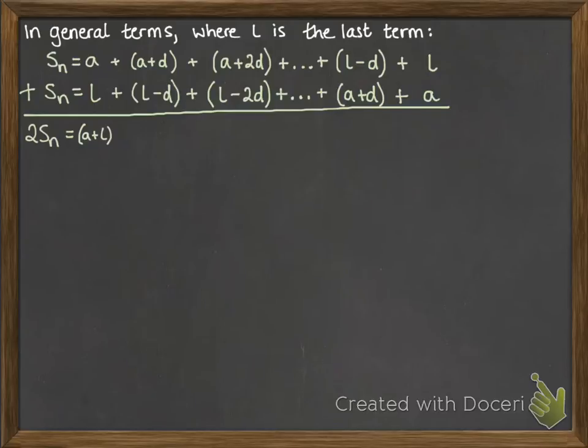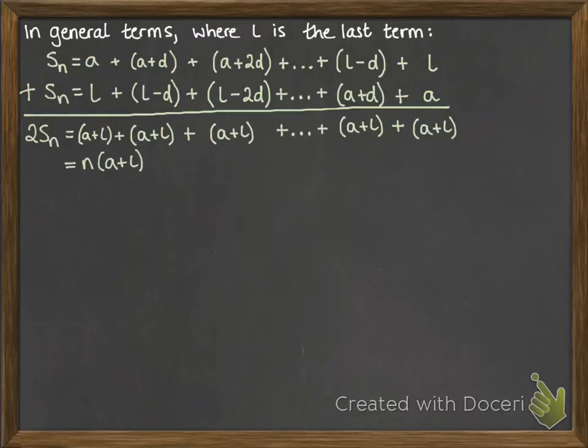So, looking at each portion of that adding up, that first column we get A plus L. The second column, if you look at that, you've got A plus D plus L minus D. So, the Ds cancel out and you get A plus L. Same with the next one, the 2D and the minus 2D cancels out, so you get A plus L. And you can see where this is going, you get A plus L every time, which means you get n lots of A plus L. That would give you twice the sum. So, if you want to work out what the sum is on its own, you would then divide that by 2. And here is our first formula for the sum of the first n terms.